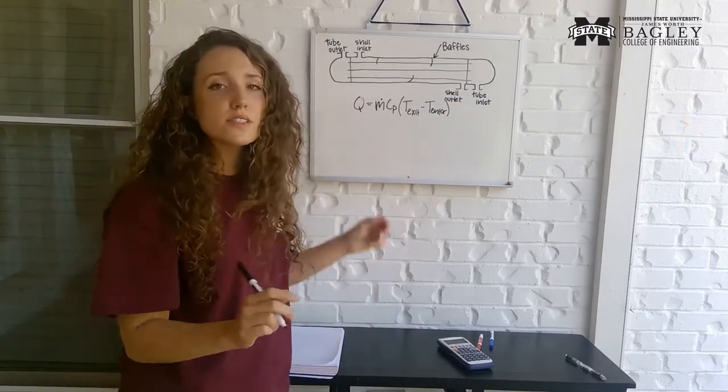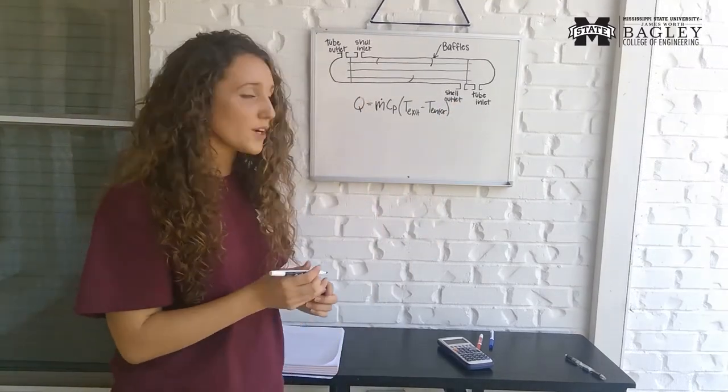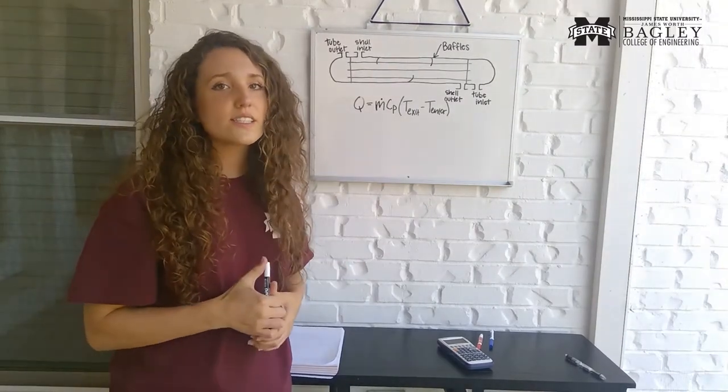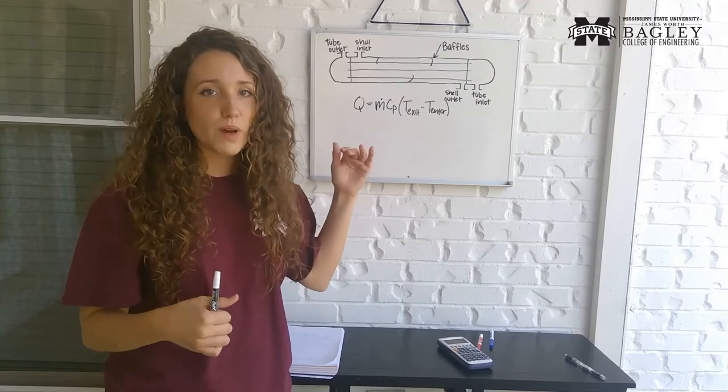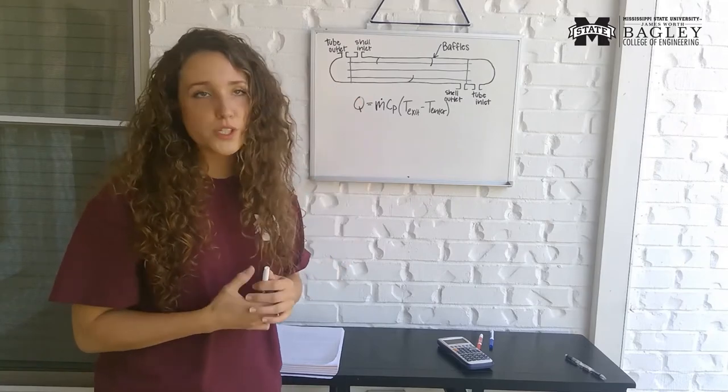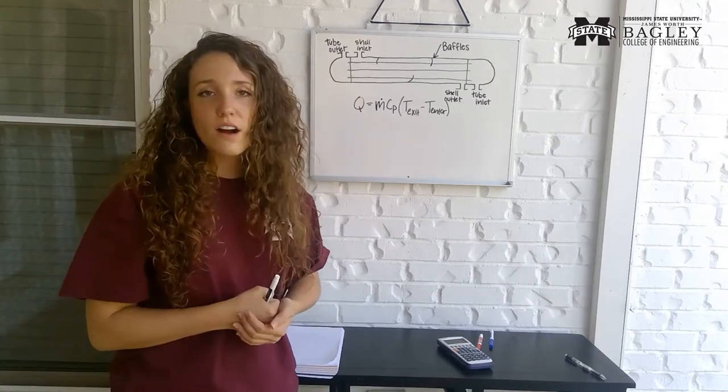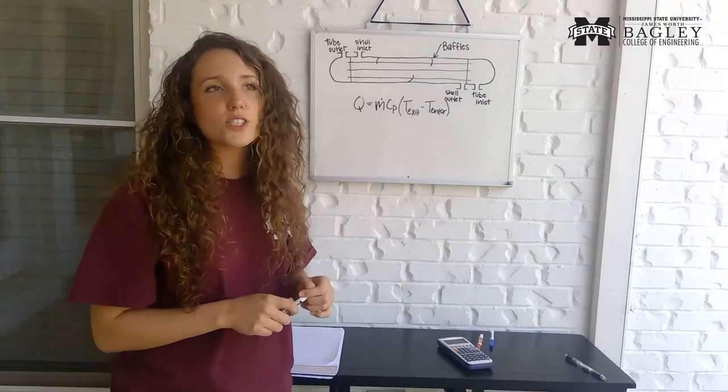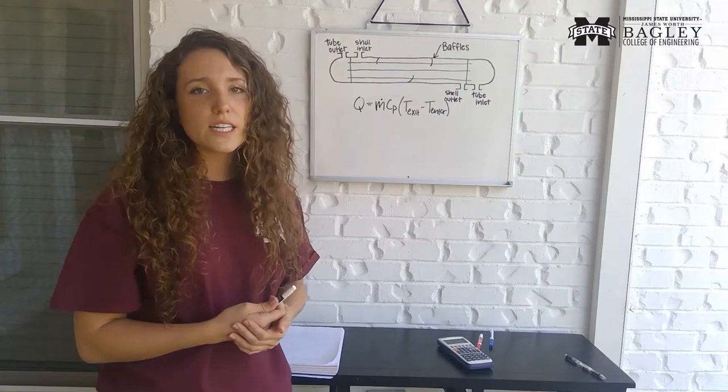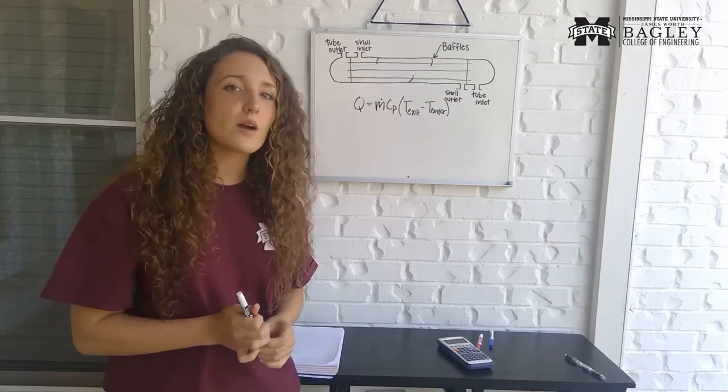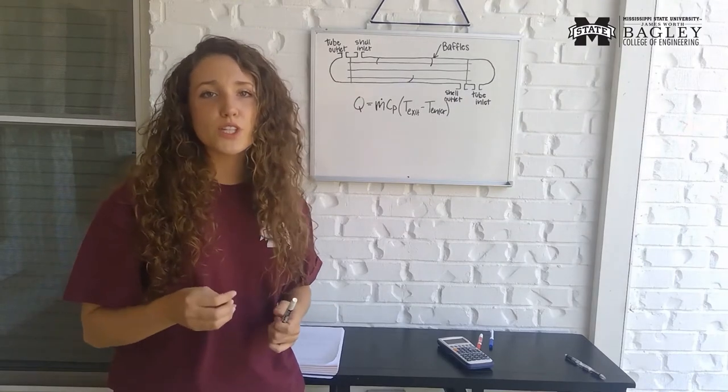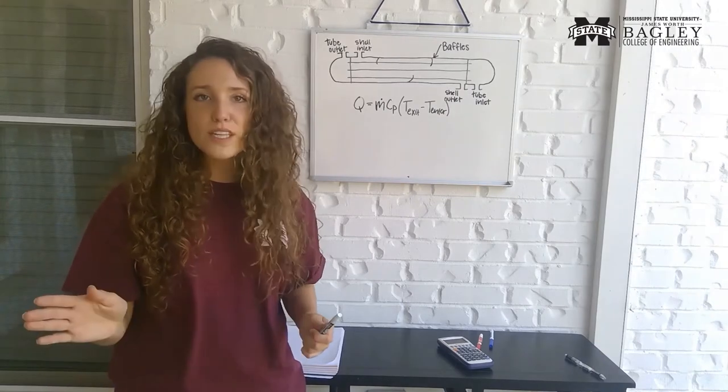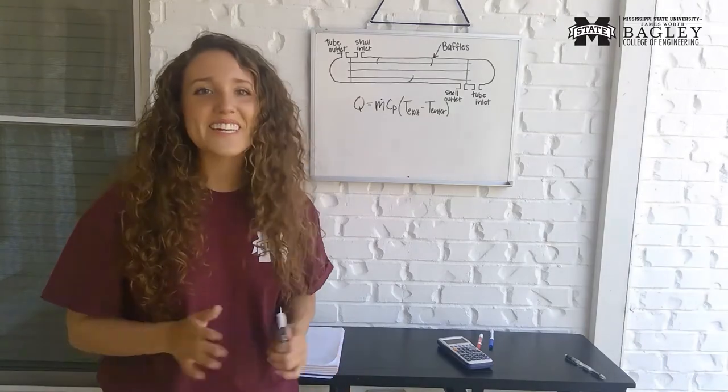Okay, q is the symbol we're going to represent heat transfer with. M with the dot above it stands for the mass flow rate. This is how fast the fluid is passing through the tubes or through the shell. In this case we're going to call it through the tubes. Cp is just a symbol that describes a specific heat. It's something I don't want to spend a whole lot of time on but specific heat is just a number that shows the behavior of a certain fluid at a certain temperature. It'll always be given. You really don't need to worry about it that much.